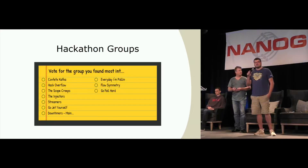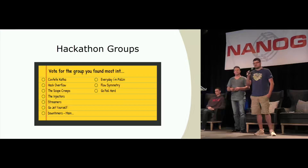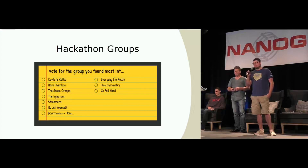At the end of it, these were the ten groups we had: KvfefKafka, HackOverflow, the ScopeCreeps, the Injectors, Streamers, GoJetYourself, the Downtimers, Everyday on Poland, Flowsymmetry, and GoFailHard.